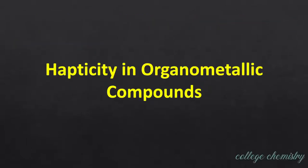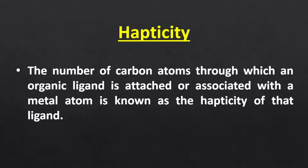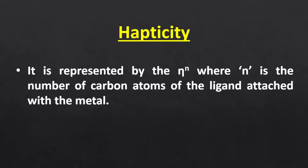The next topic is hapticity in organometallic compounds. In coordination chemistry, ligands are classified as monodentate, bidentate, etc., depending on the number of donor sites through which a ligand binds to a central metal atom. Similarly, in organometallic chemistry, ligands are classified based on their hapticity. Hapticity is defined as the number of carbon atoms through which an organic ligand is attached to a metal atom. It is represented by eta raised to power n, where n is the number of carbon atoms of the ligand attached to the metal.